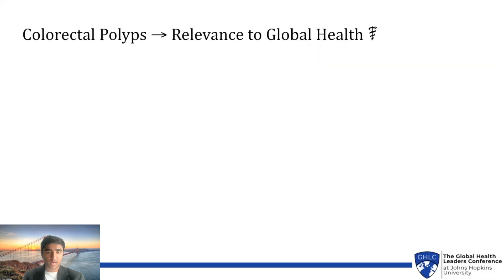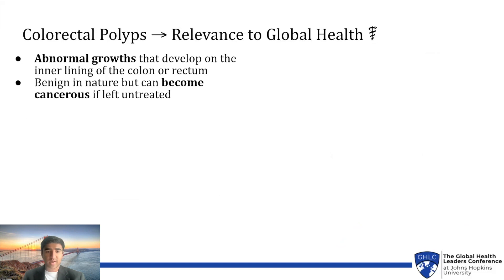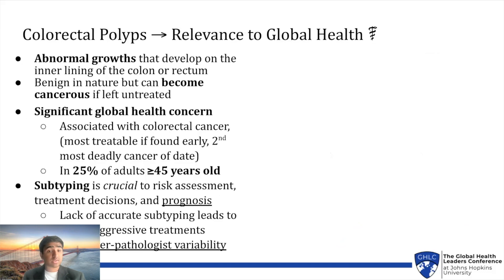I studied colorectal polyps, abnormal growths in the colon or rectum that can turn cancerous if untreated. They are a significant global health concern affecting over 25% of adults over 45, and are linked to colorectal cancer, the second deadliest but most preventable cancer in the world with early diagnosis. Accurate subtyping is crucial for risk assessment and treatments. However, high interpathologist variability makes differentiation challenging, leading to overly aggressive treatment decisions.